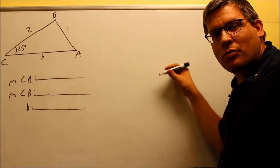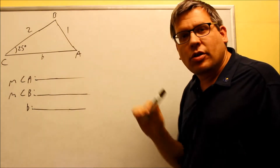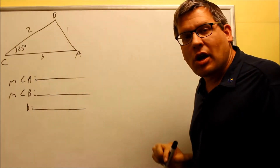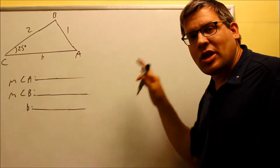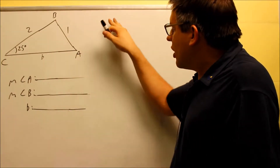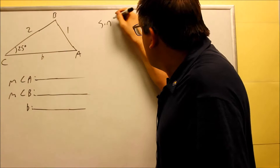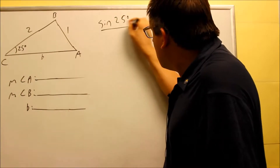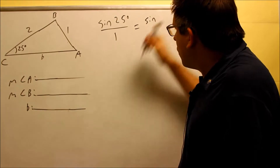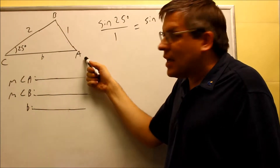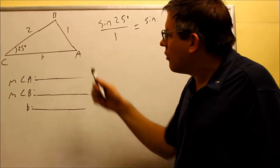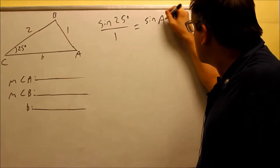In the previous example, we had 50 degrees, and now I've changed it to 25 degrees to see if this allows us to have a solution. We're going to do the same problem except with 25 degrees. We're going to set up a known ratio. We only have enough information to solve for A first, because we have big B and side b — that's not enough information to solve for it directly.